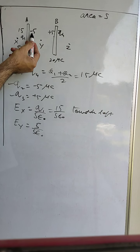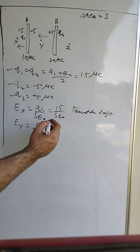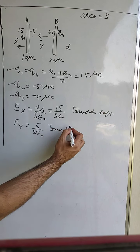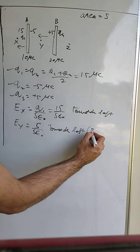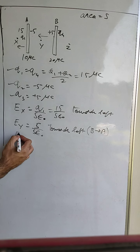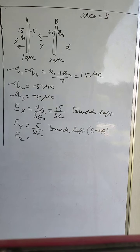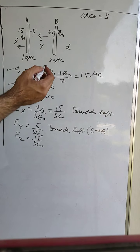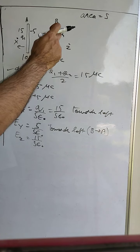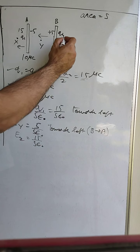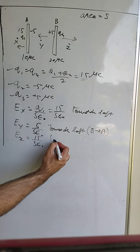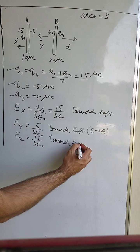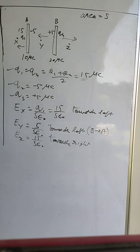Since surface q2 is negative and q3 is positive, the electric field at y is directed towards the left, that is from B to A. At point z, Ez = 15 / (S·ε₀), and since q4 is positive 15 microcoulombs, the electric field direction is towards the right. This is how we find the charge distribution on all surfaces and the resulting electric field in every direction.